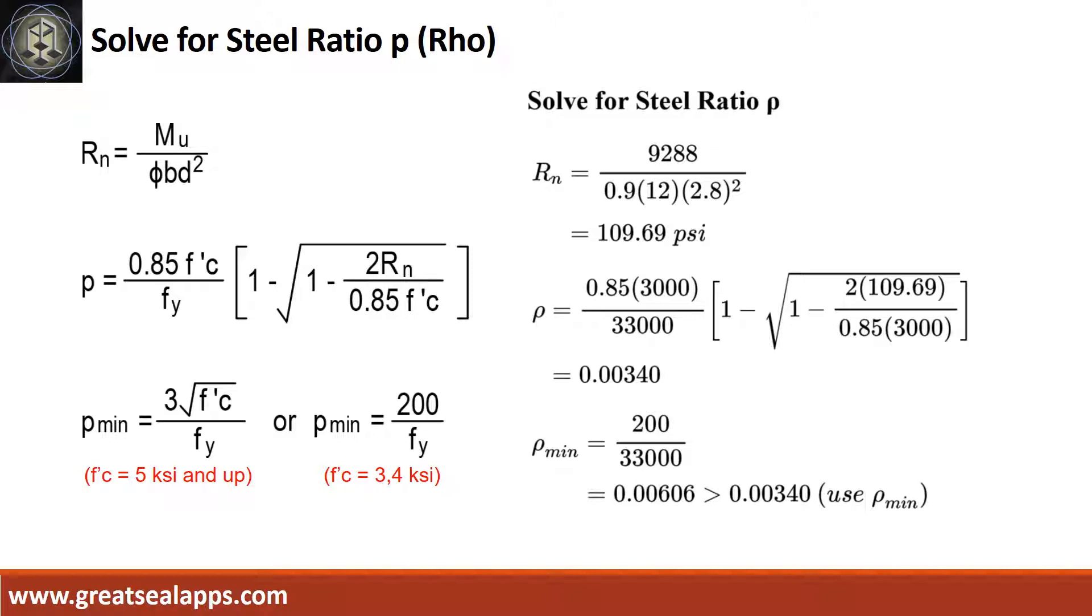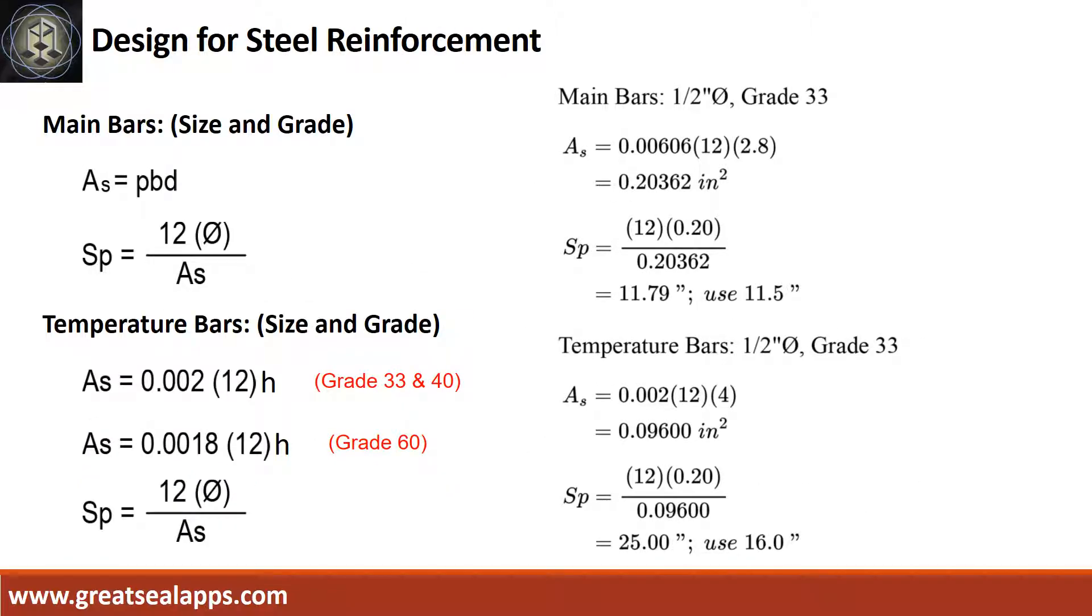Use rho minimum of 0.00606. Given rho equals 0.00606, B equals 12 and D equals 2.8. The area of steel for main bars is 0.20362 square inch. And the spacing for ½ inch diameter bar is 11.5 inches.